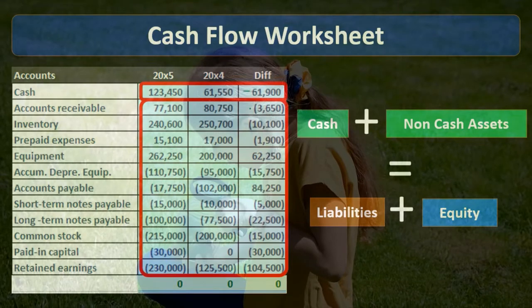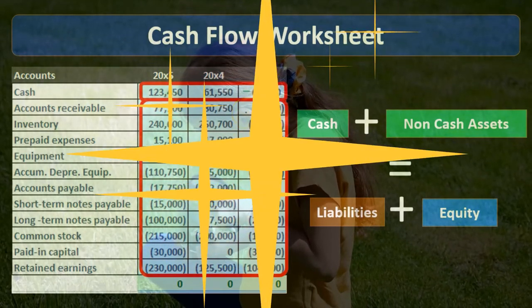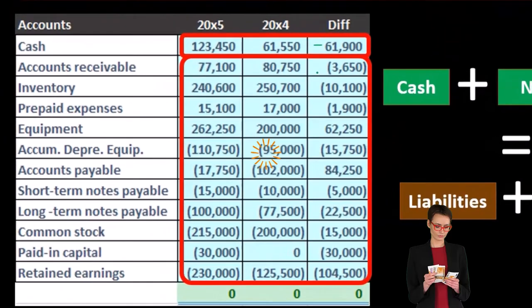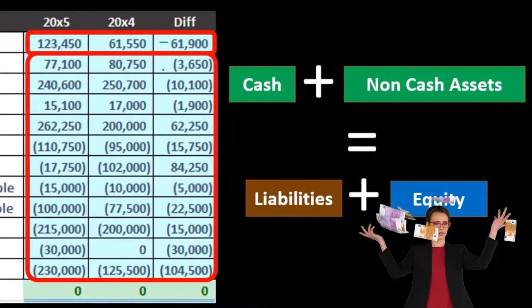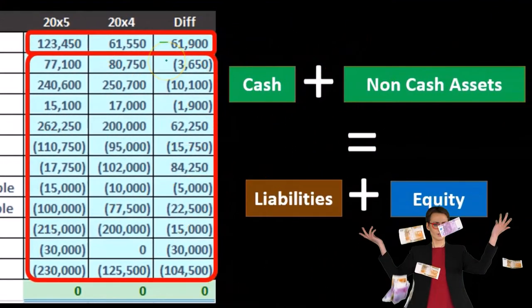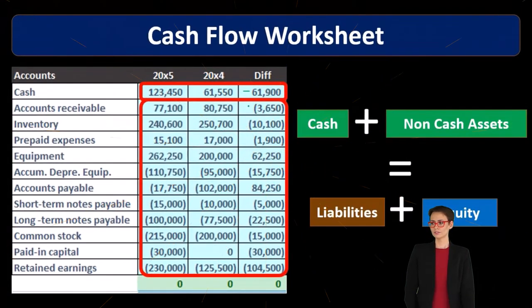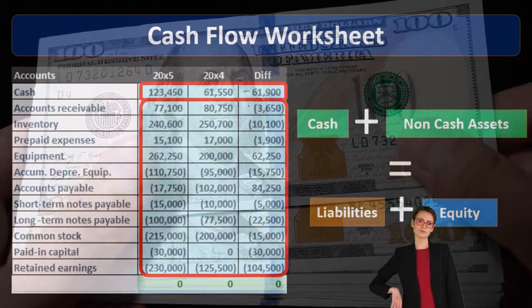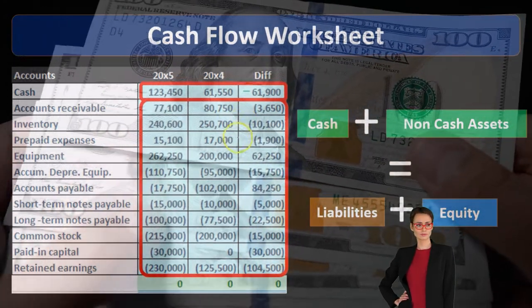For example, we know what happens with accounts receivable: it goes up when we make a sale on account, and goes down when a customer pays off the account. So we don't need to look at every single transaction as we would in the GL. We can group those together, look at the net difference in accounts receivable as a whole, and back into what happened. We'll talk more about how to do that for each individual account.